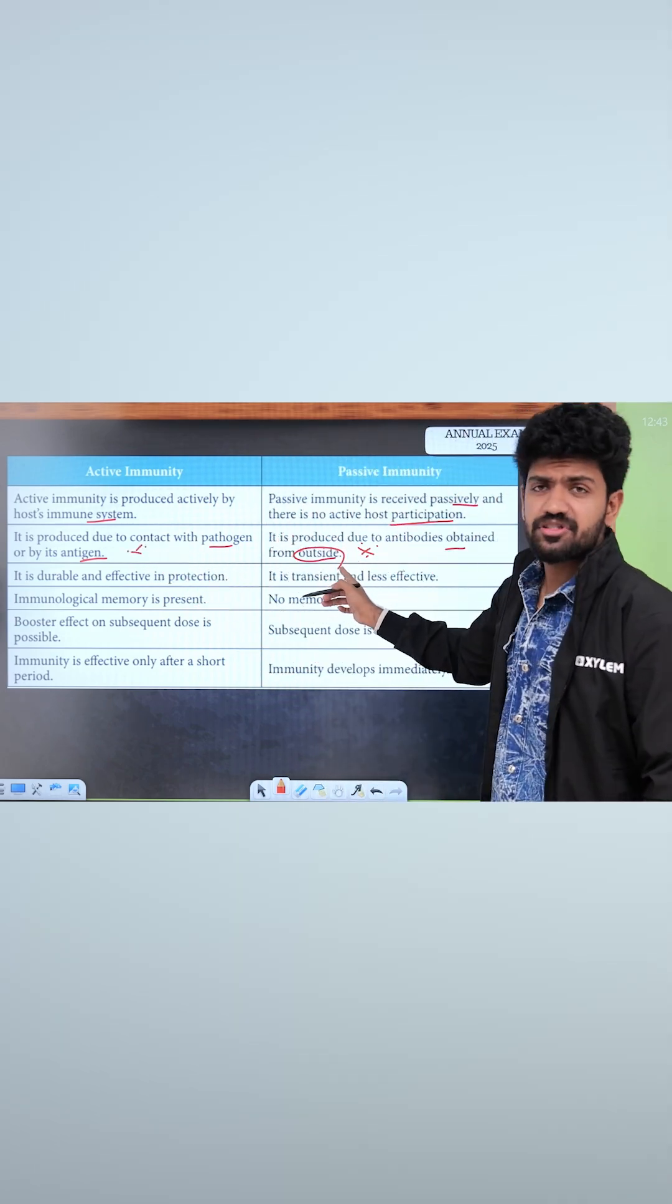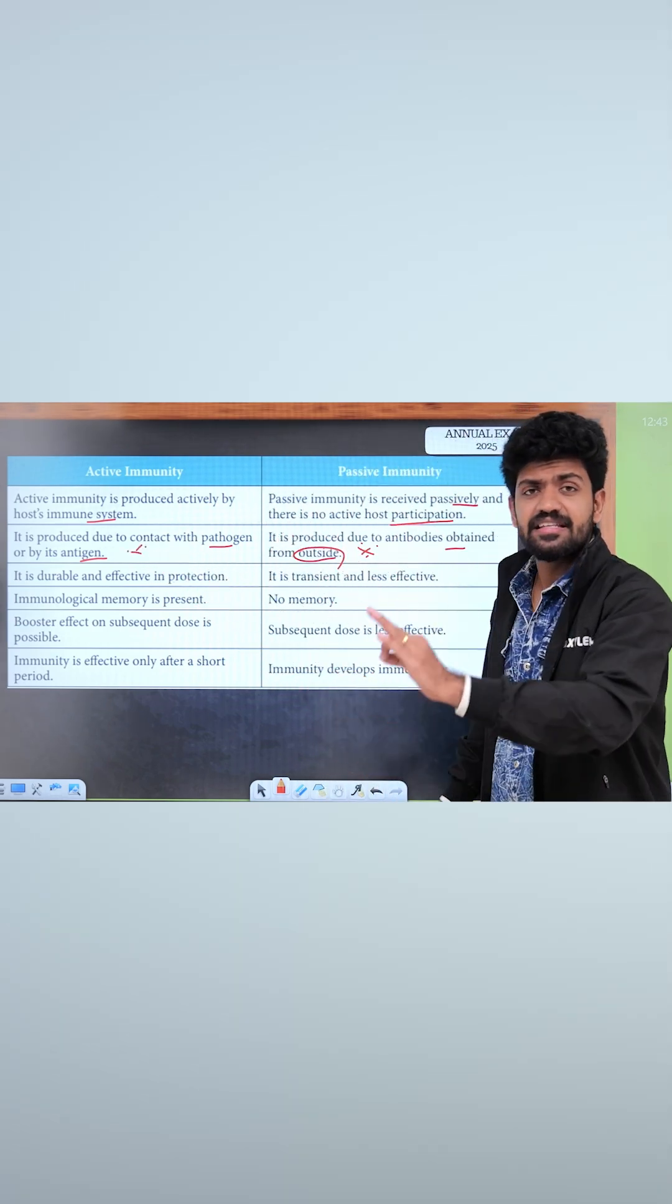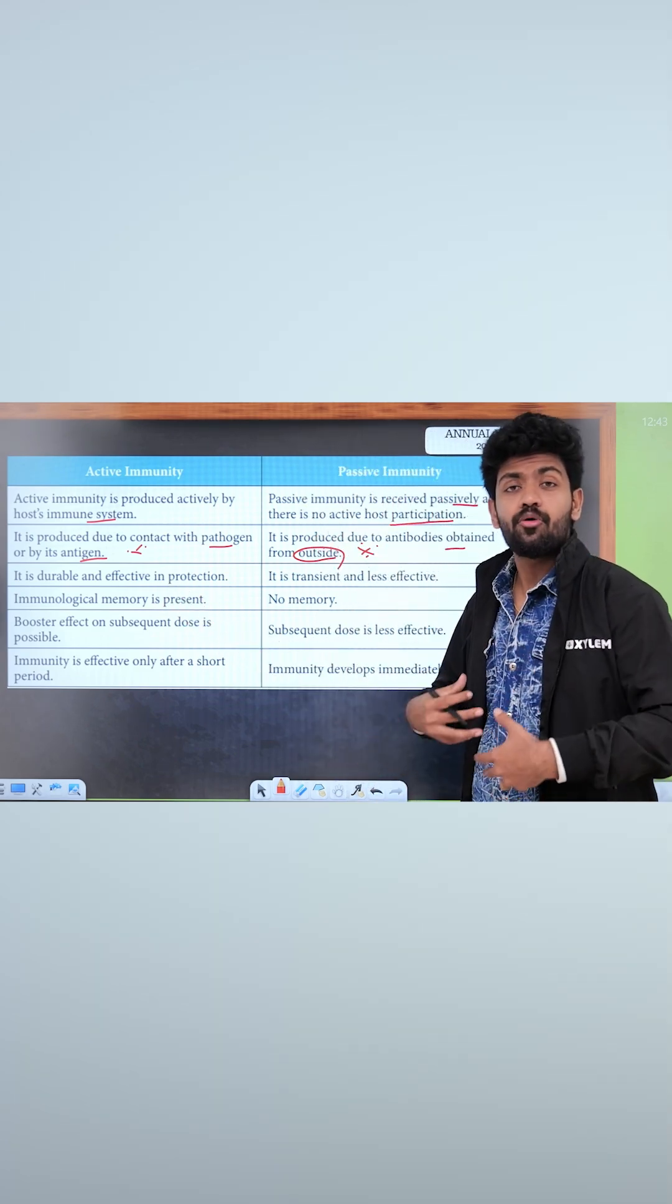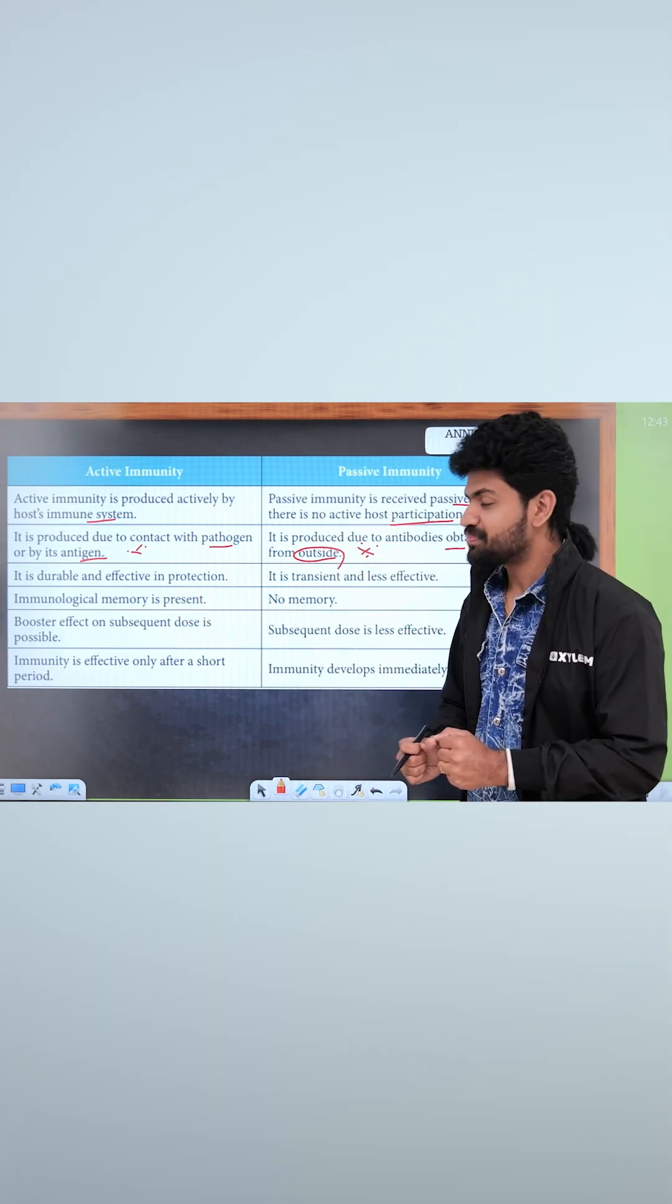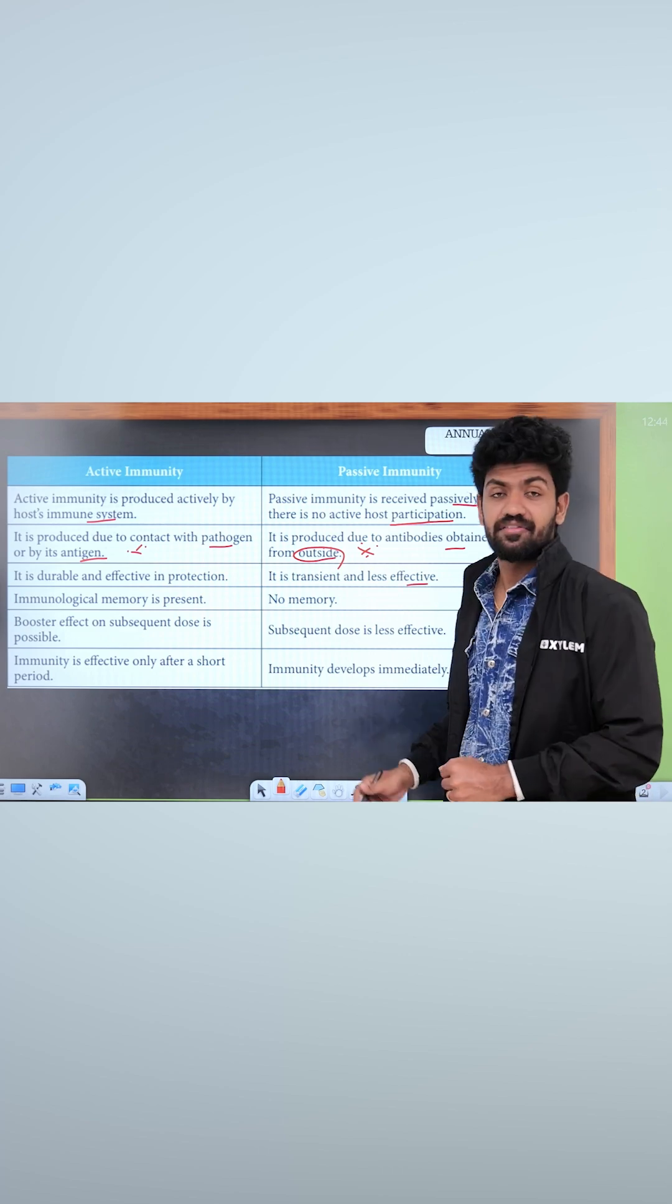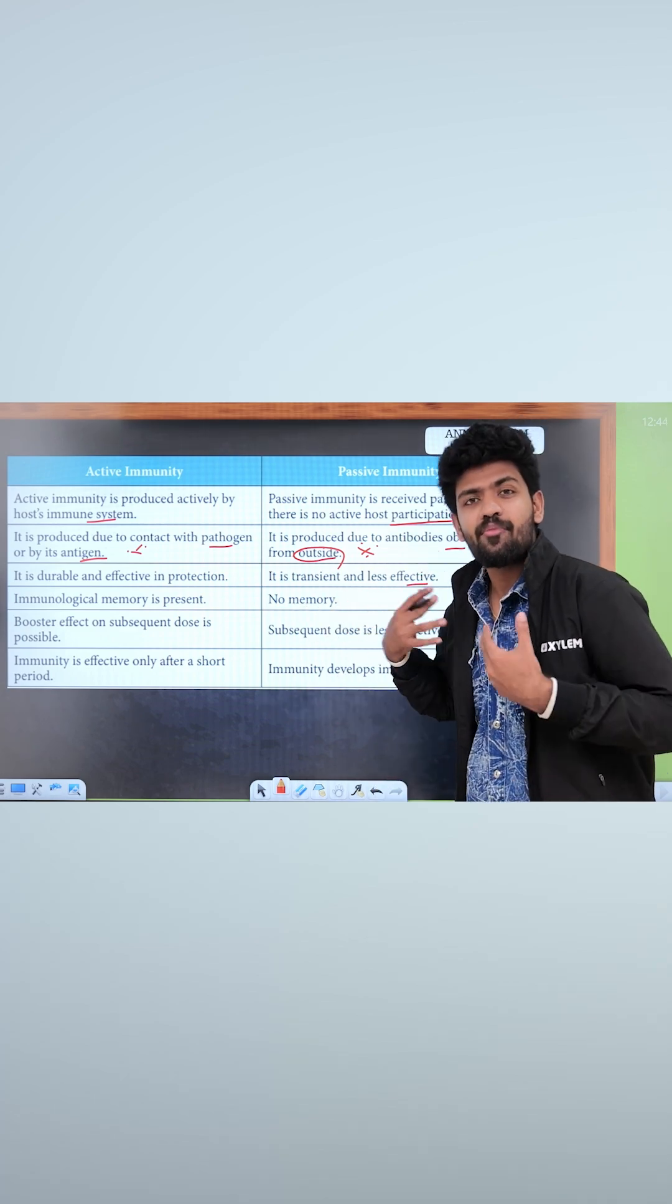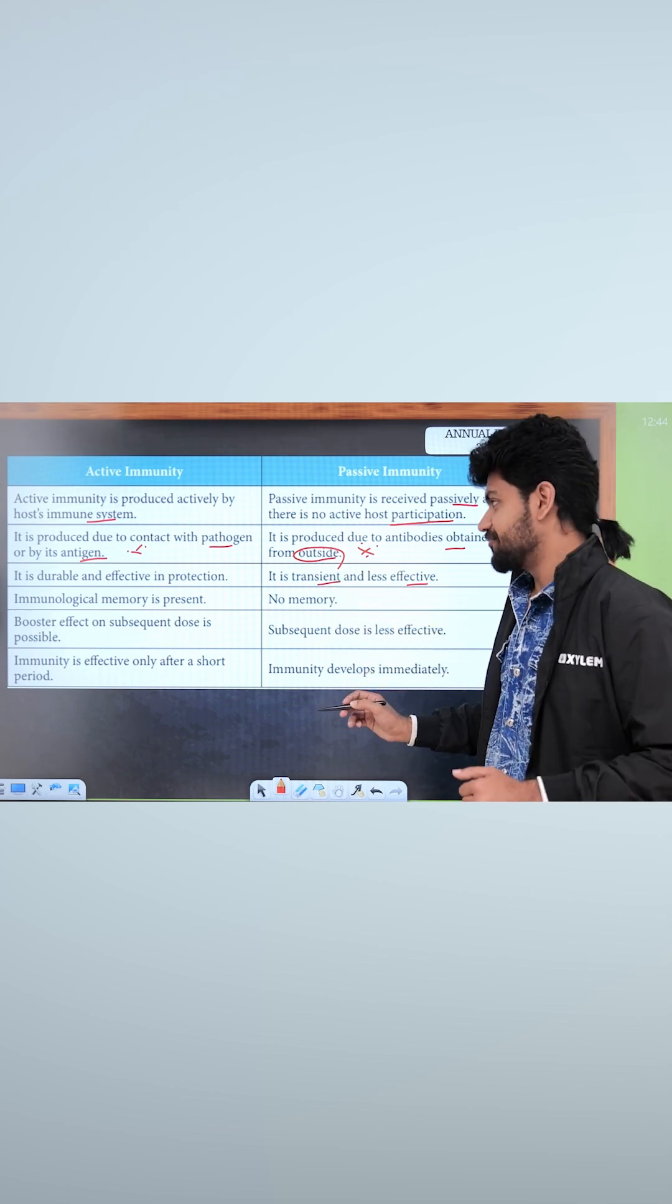In these two points, we can differentiate active and passive immunity. It is durable and effective in production. Why? Your body is very strong. It is transient, less effective. If you have antibodies from outside, it will be different from the body. So it is always temporary and less effective.